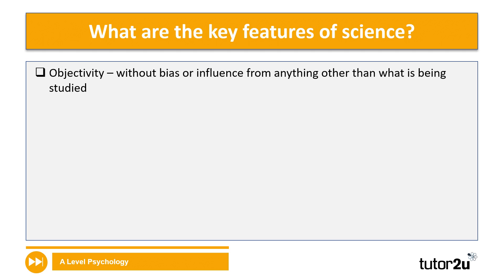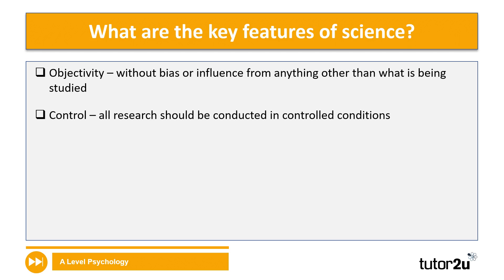In science, objectivity is strived for, and that's why researchers opt for methods such as experiments, brain scans, or any other objective ways of gathering data. Control is another key feature of science, meaning that all research should be done where possible in controlled conditions — another reason why lab experiments are considered scientific. This control allows for replicability and is the best way to try and establish cause and effect in research.